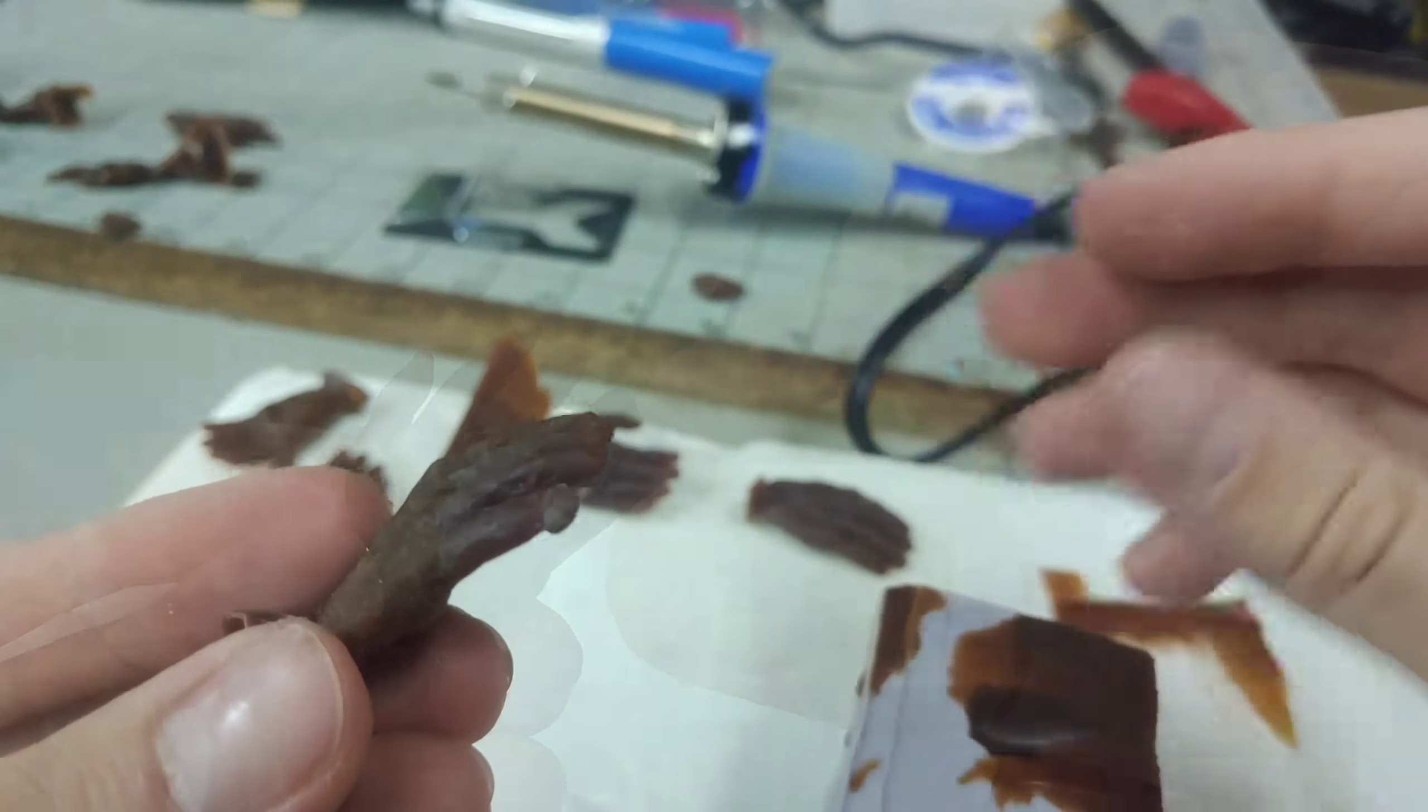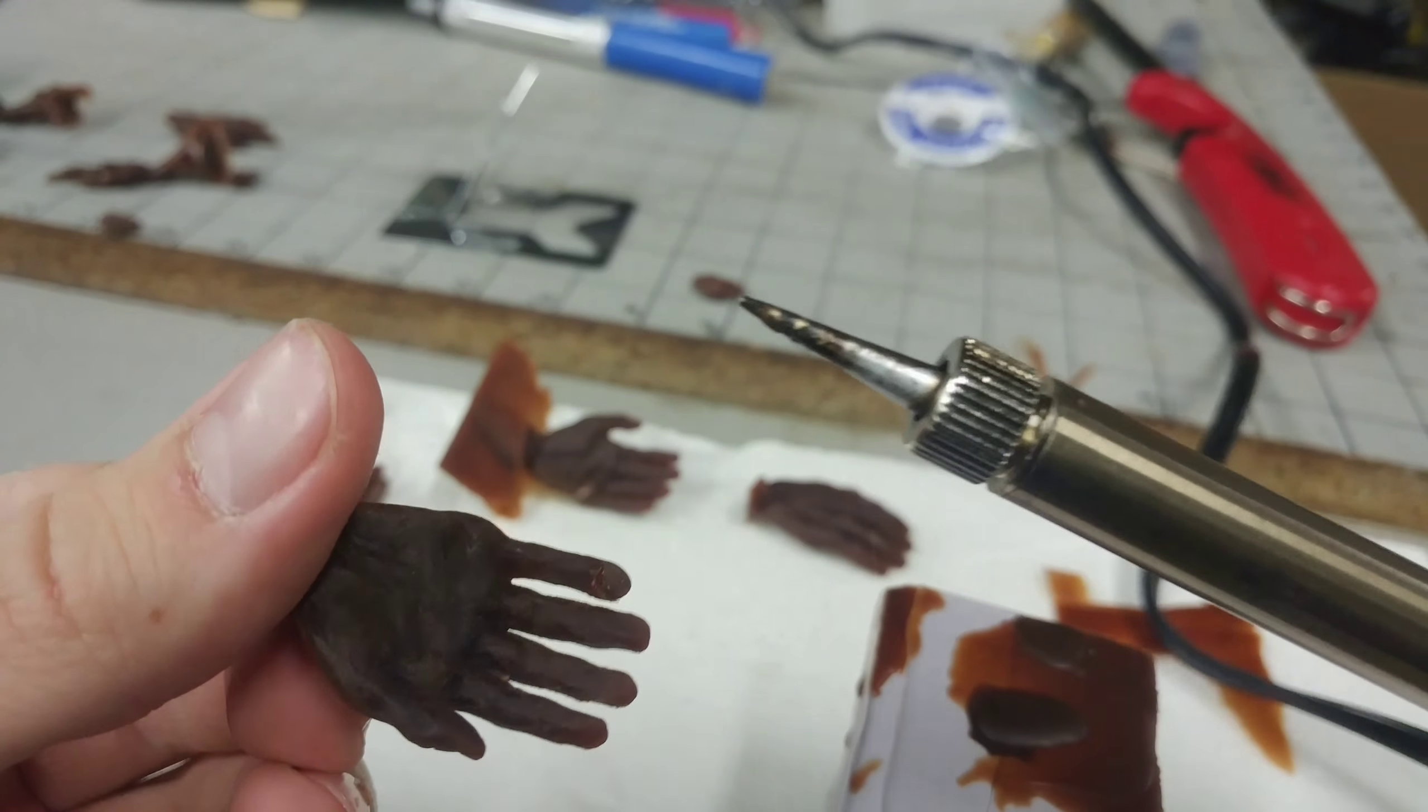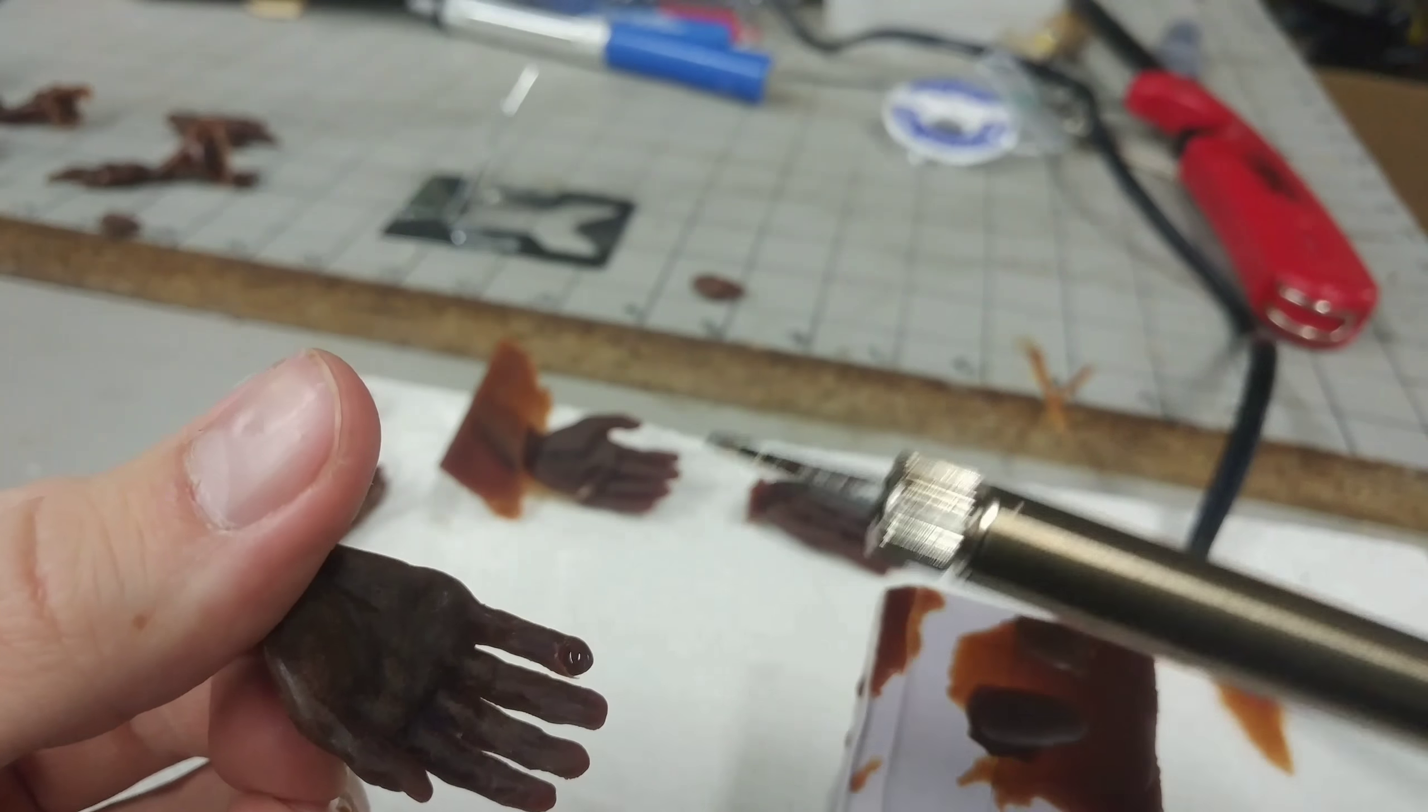I would just make little balls of wax and I'd take my soldering iron, check out my video on that if you haven't yet, I kind of melted on there and re-sculpt the fingers.